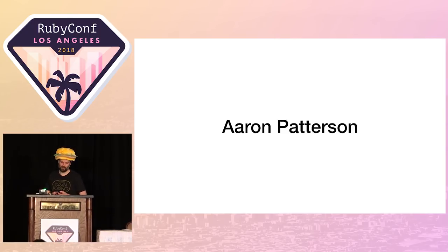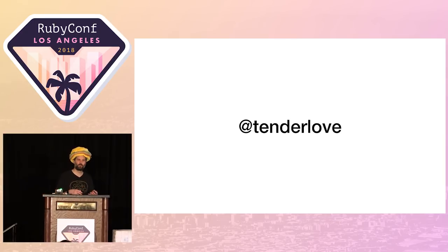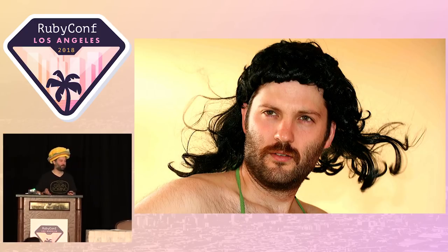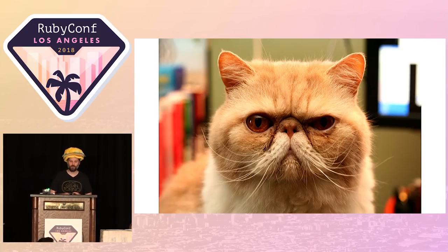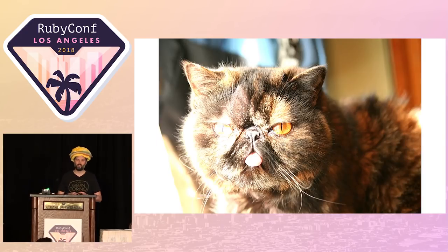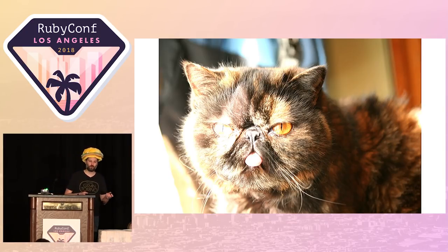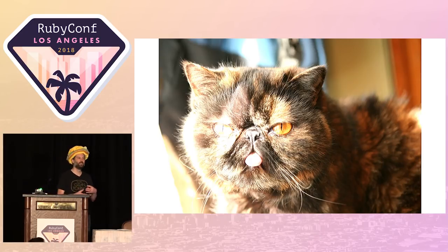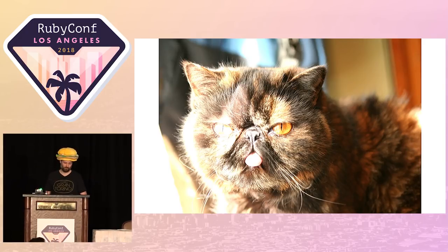My name is Aaron Patterson. You may know me on the internet as Tenderlove. If you don't recognize me in a burger hat, this is what I look like online. I have two cats. One is Gorbachev Puff Puff Thunder Horse. The other cat is SeaTac Airport Facebook, YouTube, Snapchat, Instagram — we call her Choo Choo for short. I have stickers of my cats, so if you want to come talk to me, please come say hello and I will give you a sticker.